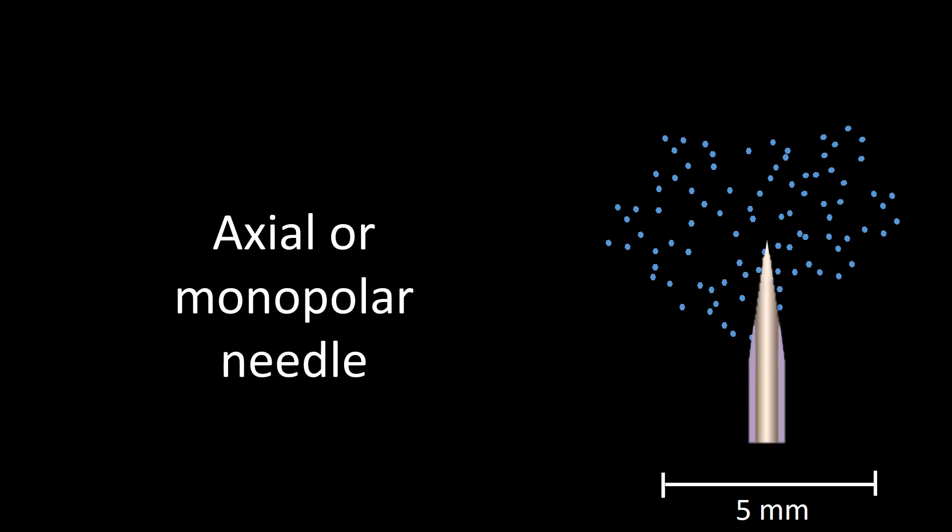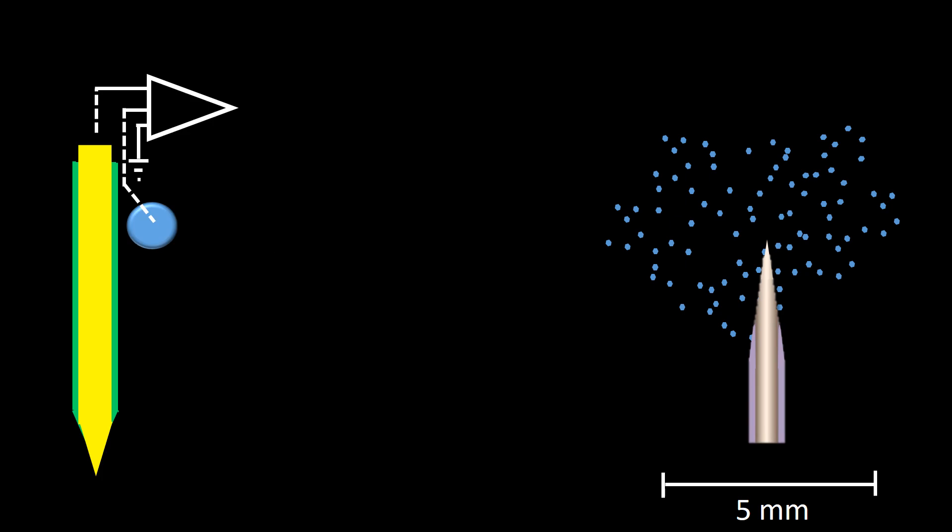Using an axial or monopolar needle, schematically represented here by a central electrode in yellow, except at the tip covered by a layer of insulating material. The electrode is connected to the amplifier at the G1 position.